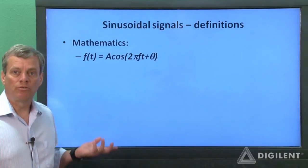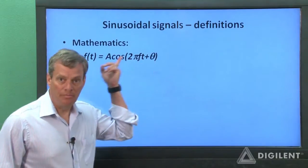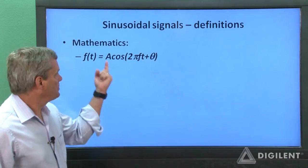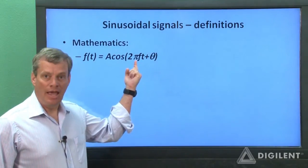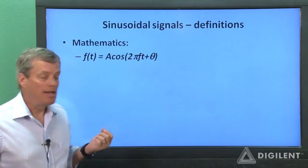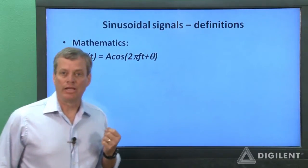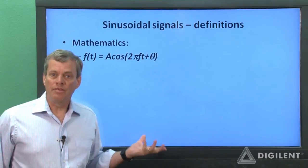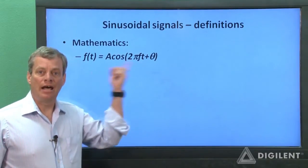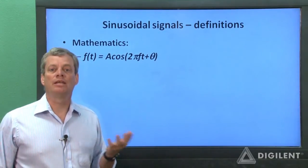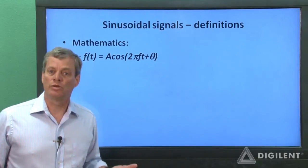The mathematical formula for a general sinusoid is shown here. The sinusoid has some amplitude A, a frequency F in Hertz, and a phase angle represented by the Greek letter theta. The important thing for us at the moment, however, is not this mathematical expression but getting a more intuitive feeling for sinusoids in general.